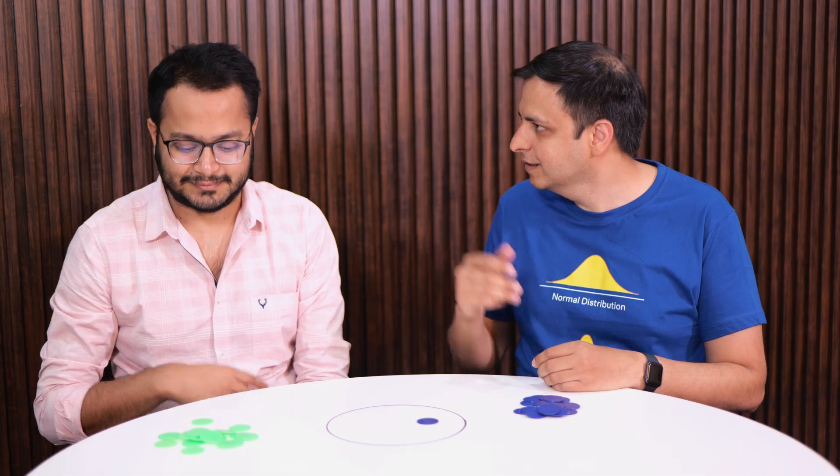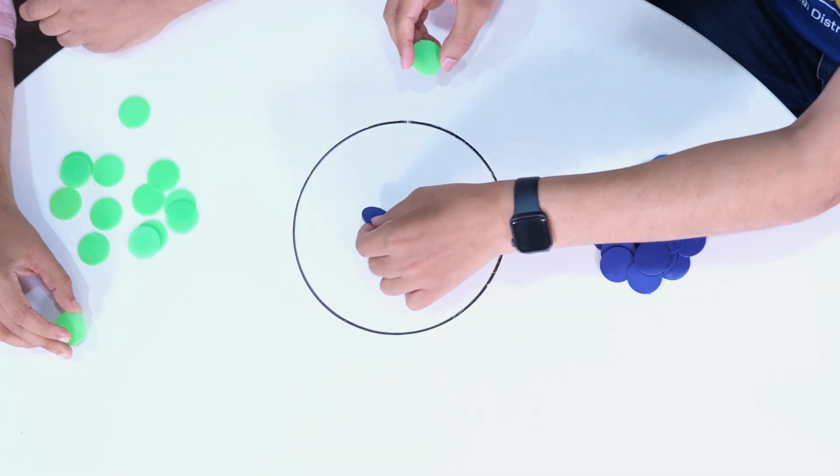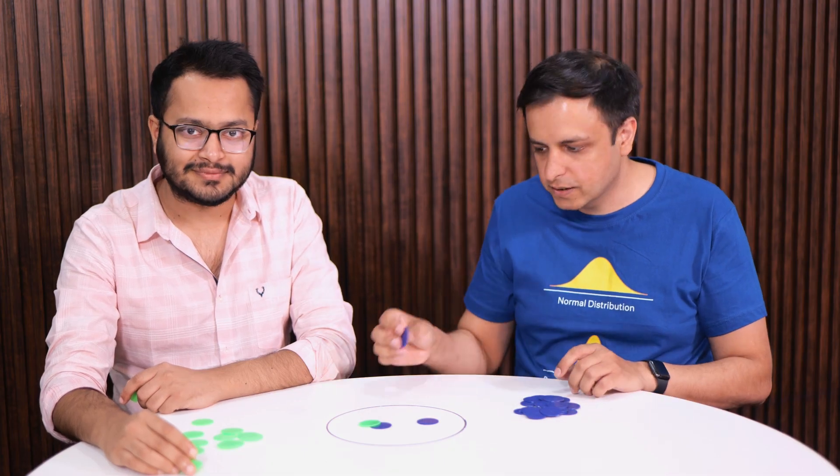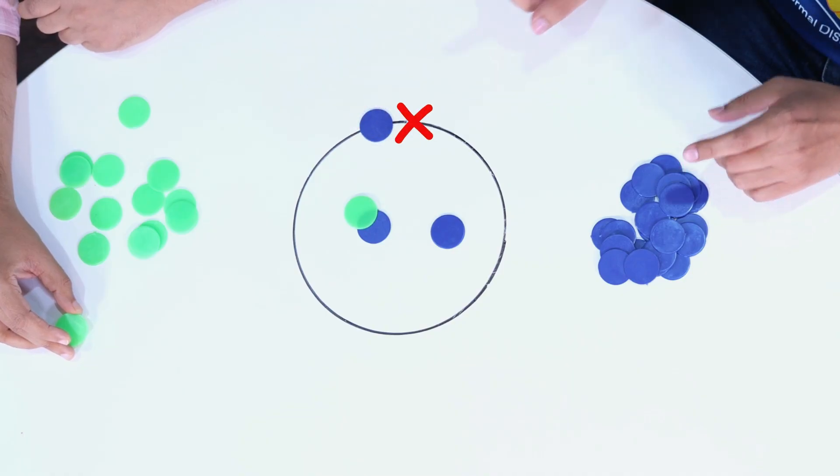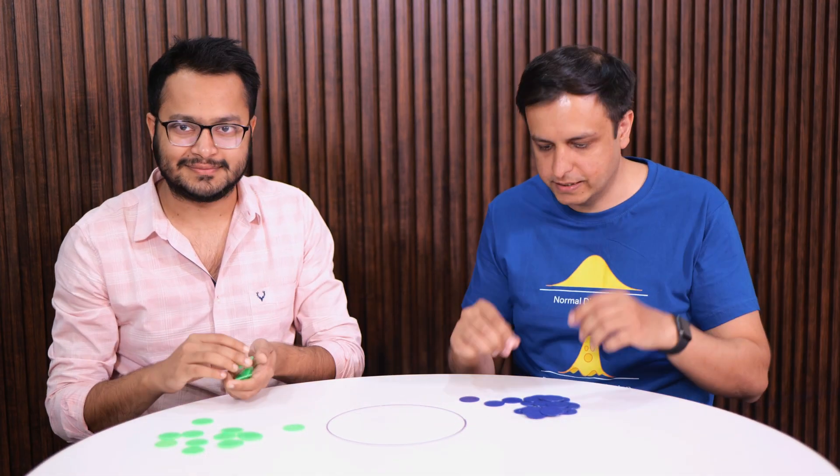Okay, so Karan, should we play this game? Remember guys that you cannot place a coin so that it overlaps another coin, so you can't do this, and you cannot place a coin so that it goes outside the circle, so you can't do either of these two things. All right, so now let's start this game. Karan, I'll go first.